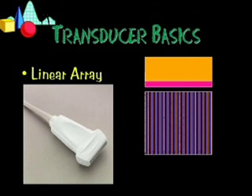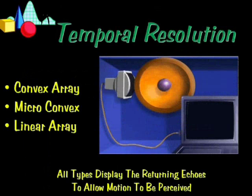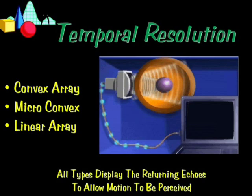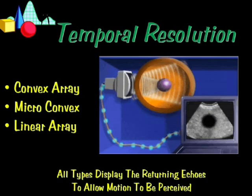Spatial resolution refers to the ability of the ultrasound machine to separate two closely spaced objects. Temporal resolution refers to the ability of the ultrasound machine to show things in real time with real motion, and this requires high frame rates. This allows motion to be seen without jerkiness or missing frames.